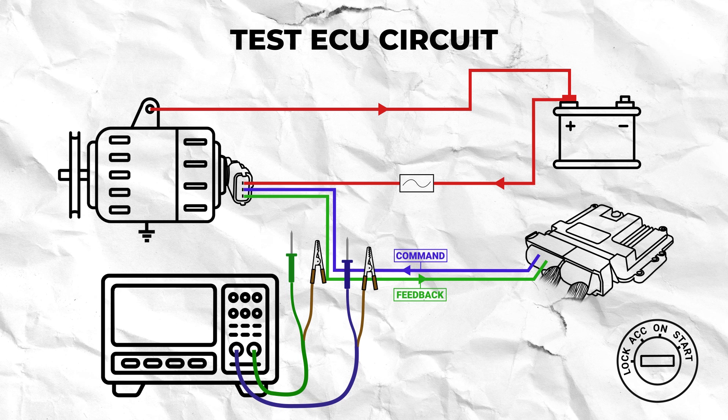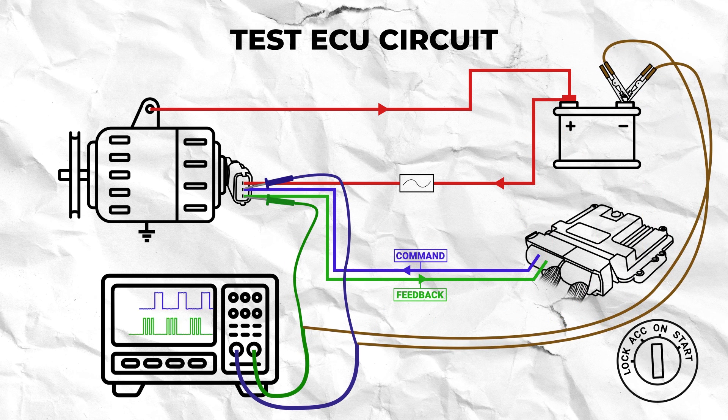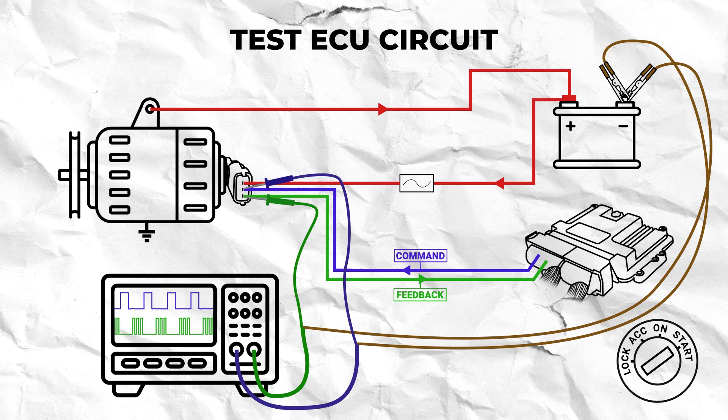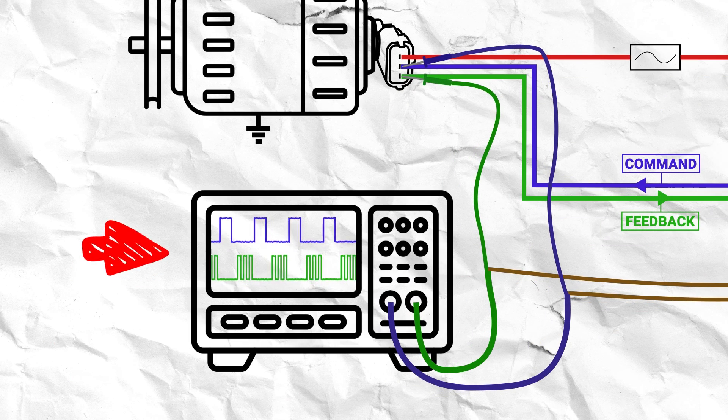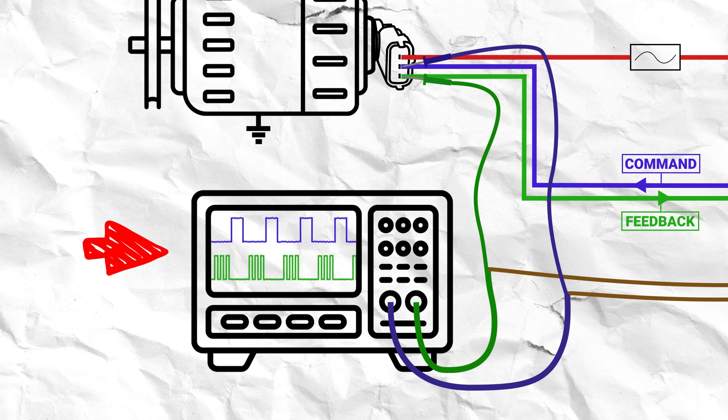These can only be tested using an oscilloscope so back probe each wire at the alternator and ground each connector then observe the duty cycle signal. As we said before this is a pulse width modulation waveform so the signal should be free of noise and have clear peaks and troughs.